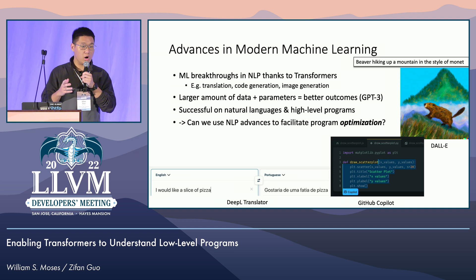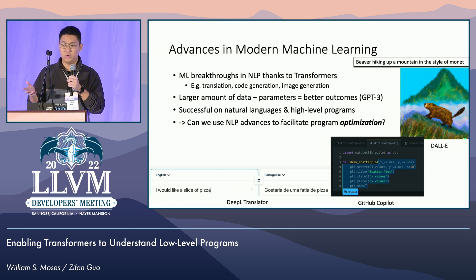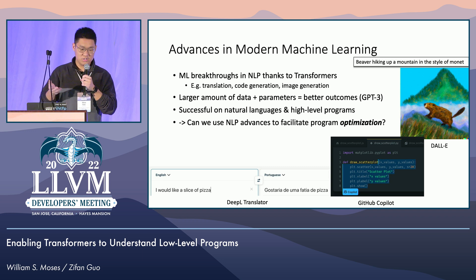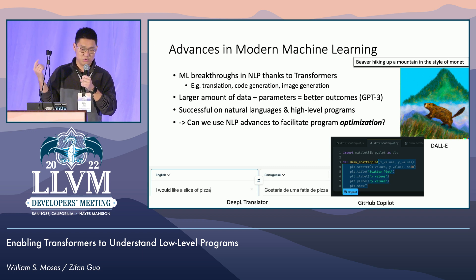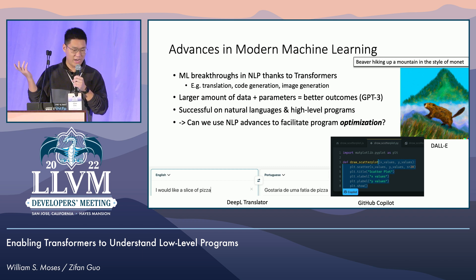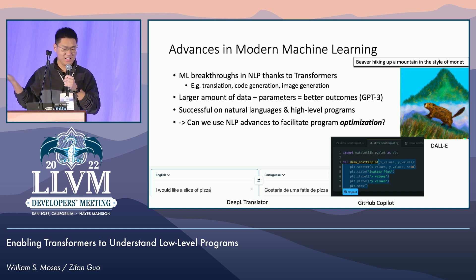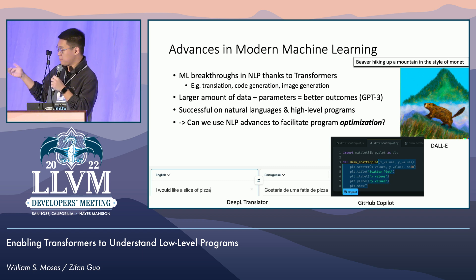Right now, there are a lot of advances in the machine learning world. There's this tool called DALL-E which takes in some string of text describing what the picture is and generates a really cool picture. I've typed in 'beaver hiking up a mountain in the style of Monet,' and that shows up.